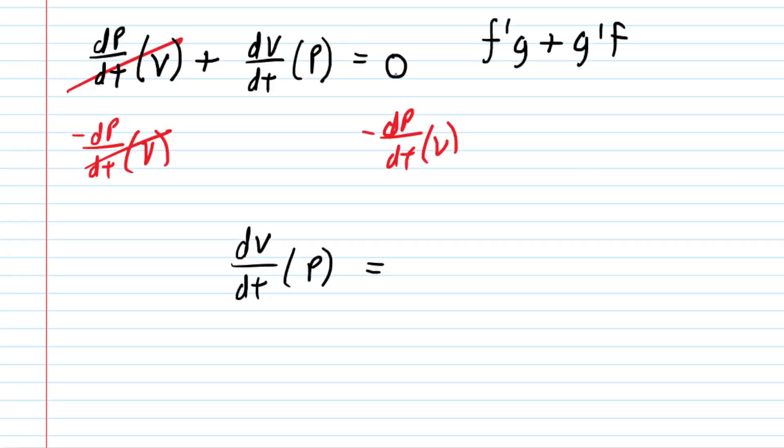Notice on the right-hand side we're going to be subtracting from 0, so this becomes negative dp dt times v. And then finally we can divide both sides by the pressure p so that it cancels on the left-hand side.